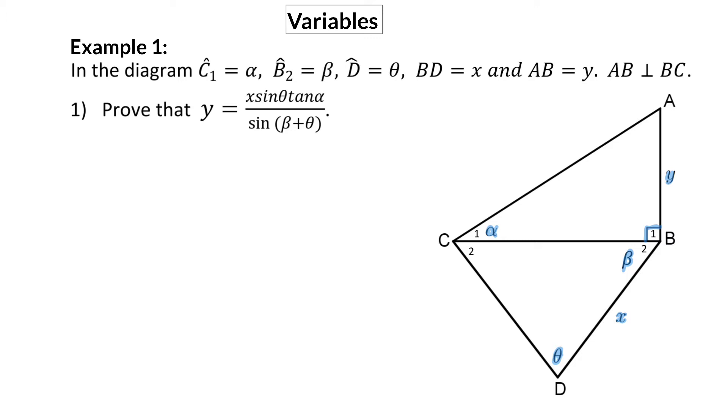In triangle ACB, we can calculate angle A by subtracting the other two angles in that triangle from 180 degrees, and that will be the 90 degrees at angle B1 and alpha at angle C1. This can be simplified to 90 minus alpha.